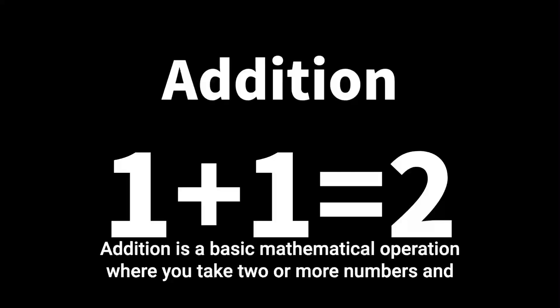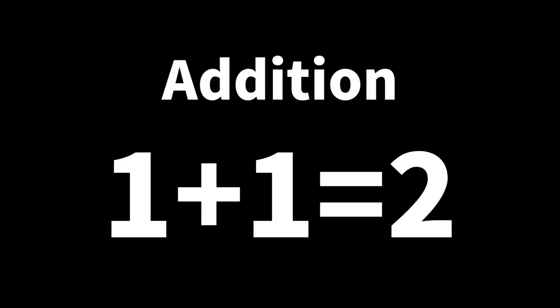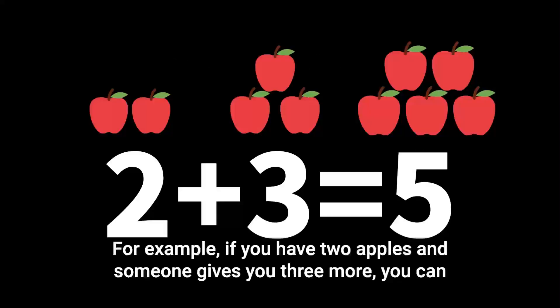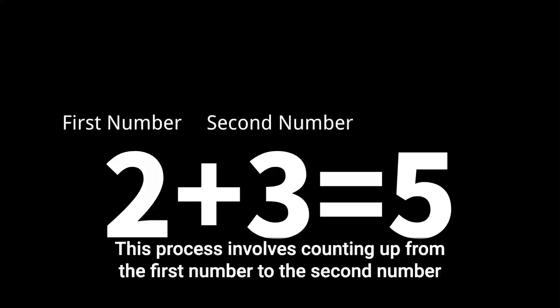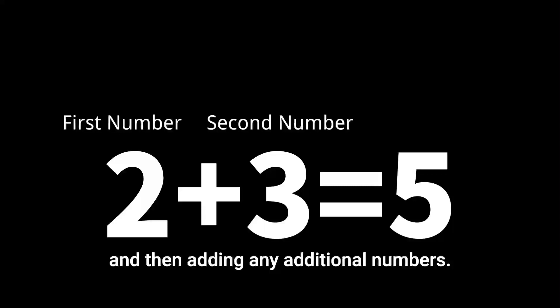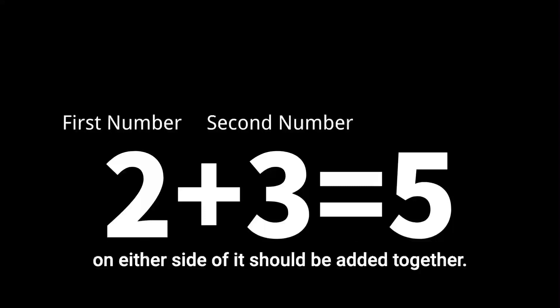Addition is a basic mathematical operation where you take two or more numbers and put them together to find their total or sum. For example, if you have two apples and someone gives you three more, you can add them together to get five apples. This process involves counting up from the first number to the second number and then adding any additional numbers. Addition can also be represented using the plus symbol, which indicates that the two numbers on either side of it should be added together.